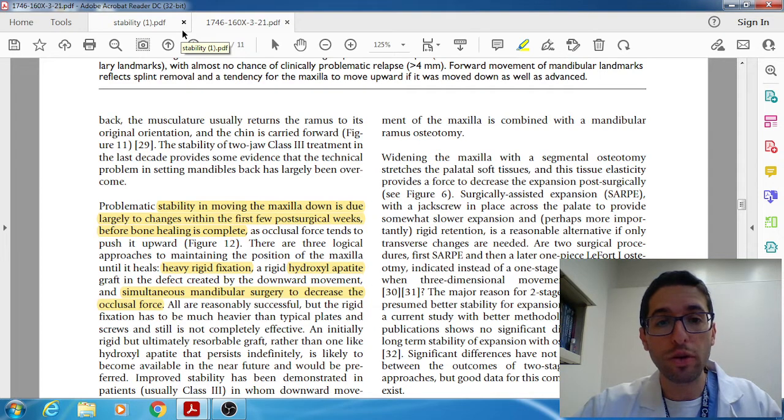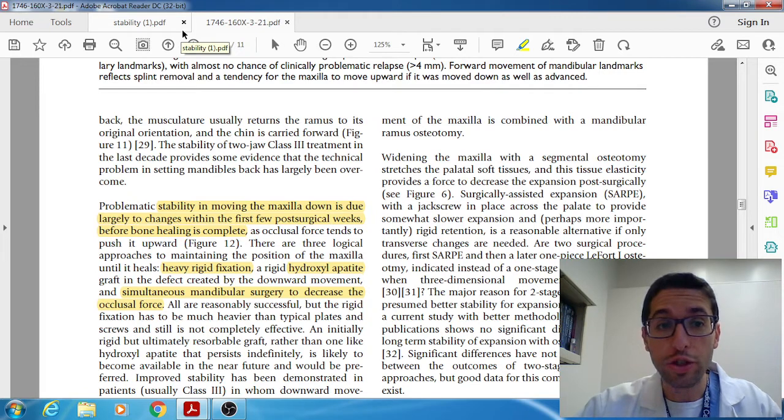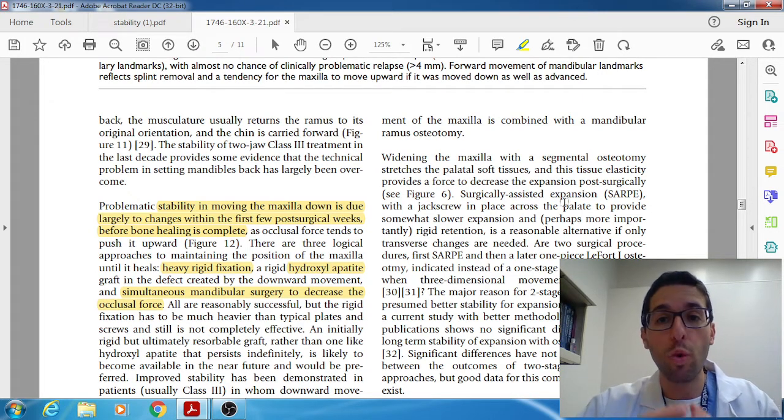And then when it comes to maxilla down we have different ways of trying to overcome those and make them more predictable and that includes using heavier rigid fixation using bone grafts or hydroxyapatite bone grafts and also if you do a double jaw surgery that also helps kind of indirectly because when you do a double jaw surgery the bite post surgically tends to be a lot softer. So between those things using heavier fixation bone grafting and doing a double jaw surgery we were able to overcome that.